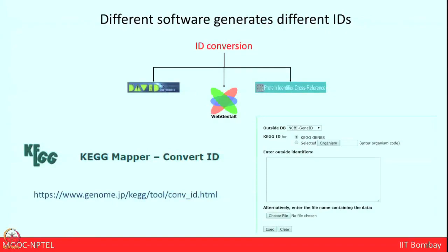There is an important tool — the KEGG Mapper Convert ID — which is very important because, unlike other platforms, we cannot put just any ID into KEGG Mapper. We have to get the KEGG gene ID from the KEGG Mapper first, and then only we can put it into the identification toolbox to get the KEGG mapping pathway. I will show you how from a test dataset we can approach KEGG Mapper, convert the ID to KEGG gene, and then put those KEGG-converted IDs into KEGG Mapper to get the pathway.